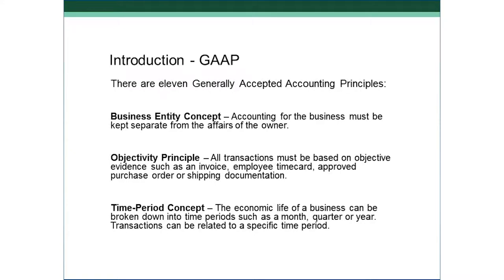There are 11 Generally Accepted Accounting Principles. These three we've already learned about, but let's do a quick review. The Business Entity Principle, or Concept, says that an owner and the business must be kept separate. The bank account of the owner cannot be commingled with the business account. When the owner contributes cash or other assets to the business, it's actually a transaction from the owner into the business, and vice versa — when the owner withdraws cash or other assets, it is kept separate from the bookkeeping of the business.